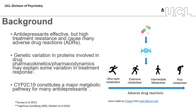CYP450 genotypes are often grouped into four main phenotypic groups: poor, intermediate, extensive or normal, and ultra-rapid. Individuals in the poor metaboliser group may take longer to metabolise their medication and therefore be at increased risk of experiencing adverse drug reactions. Those in the ultra-rapid metaboliser group may metabolise their medication too quickly and require higher doses to achieve the desired therapeutic outcome.